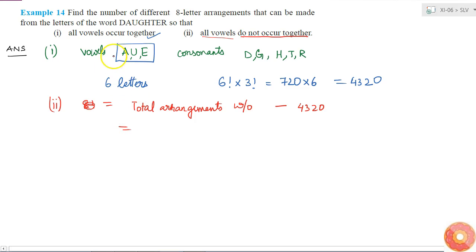What is the total number of arrangements? There are eight letters so it will be 8 factorial minus 4320. 8 factorial is 56 times 6 factorial, and 4320 I can also write as 6 times 6 factorial. Therefore this is equal to 50 times 6 factorial, which is 50 times 720.